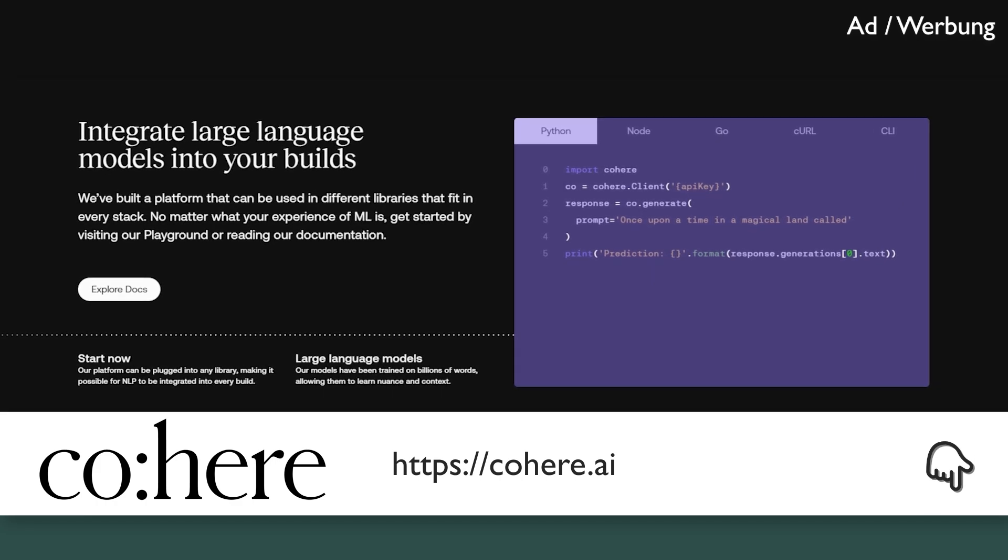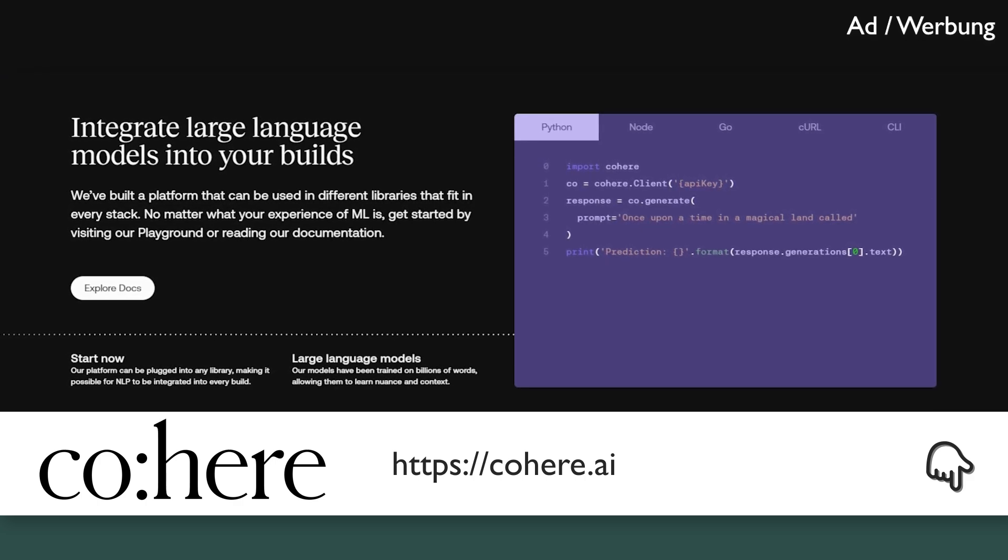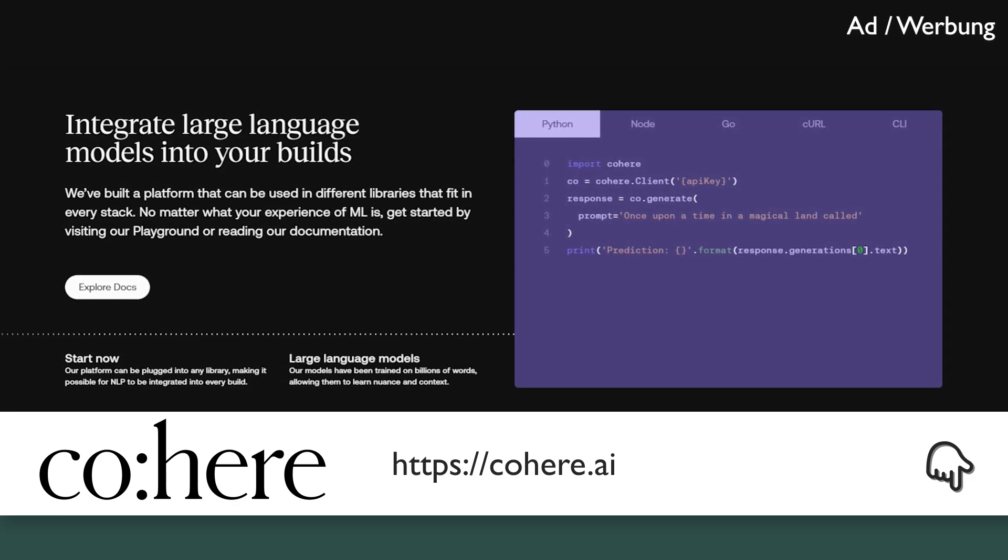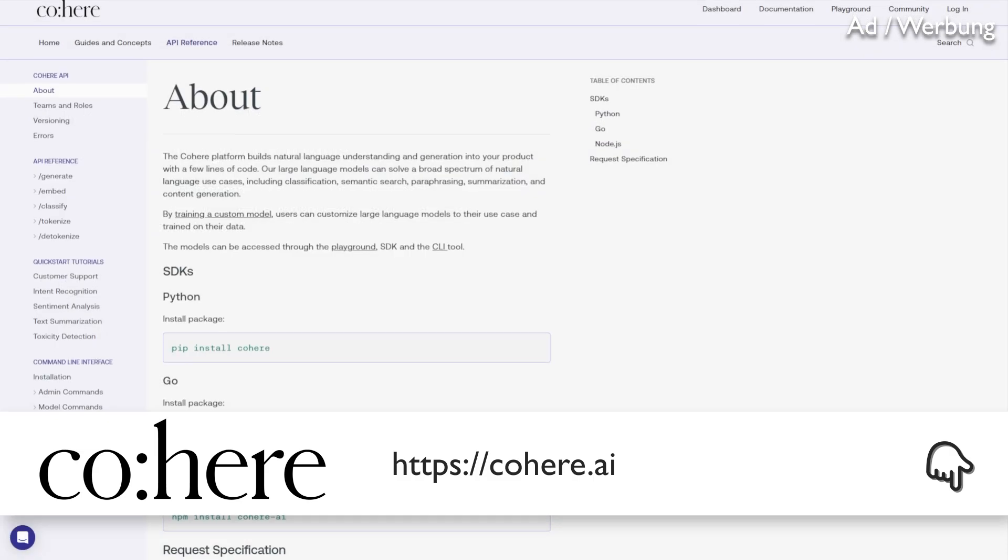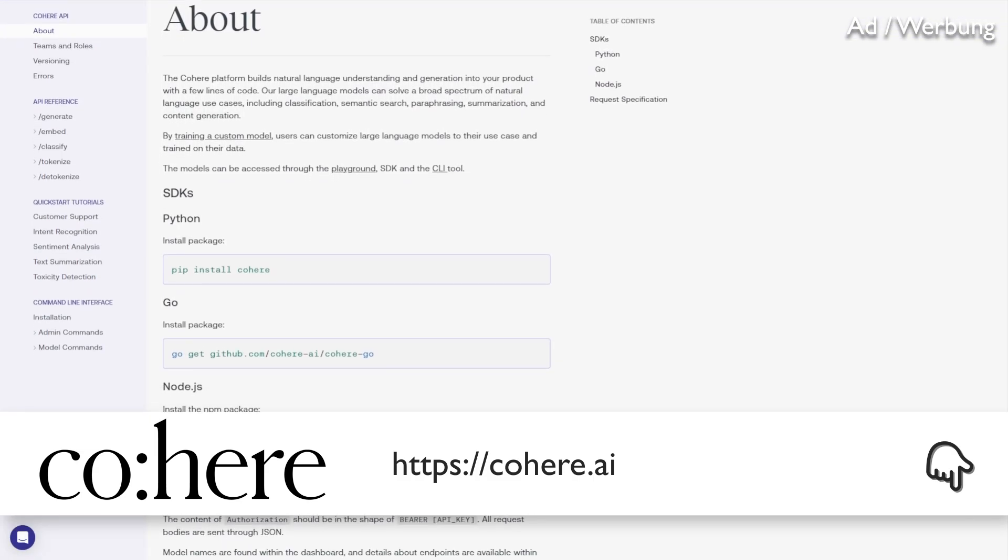All you need to do is to write these few lines of code to start generating text. You don't even need machine learning skills to use Cohere. Just install with pip install Cohere and you are ready to go in Python.